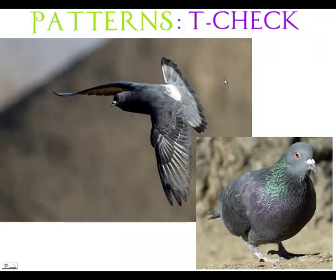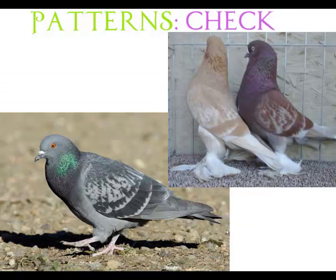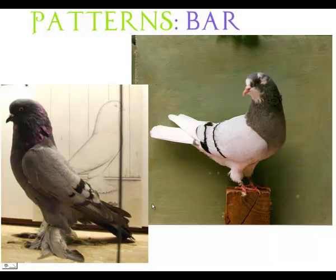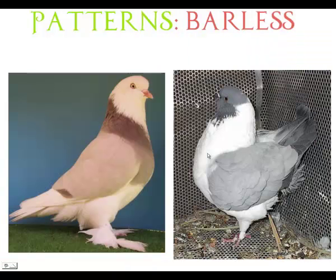Now on to patterns. Patterns all have a unique pattern on their wing shield, unless they're barless. This is T-check, and T-check has little t's on each individual feather on the wing shield — it is the most dominant of all patterns. Then you have check, T-check's sister, which looks like a checkerboard on the wing shield, and they are the second most dominant. Then patterns, then bars, which have a clean, clear wing shield with two stripes on the end called bars. And then barless, the weakest gene of all — you want nothing at all on the wing shield.